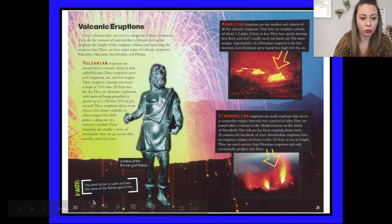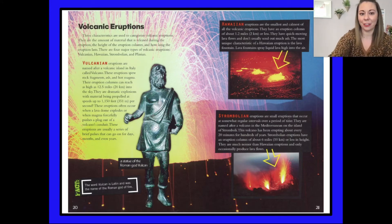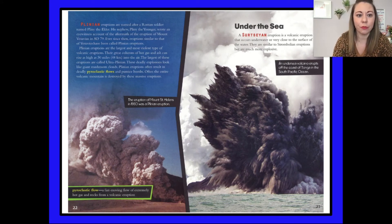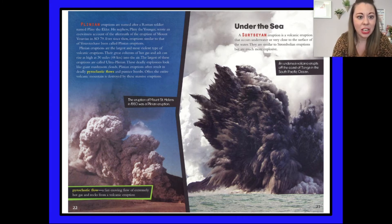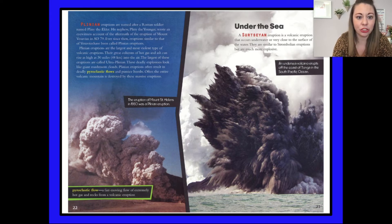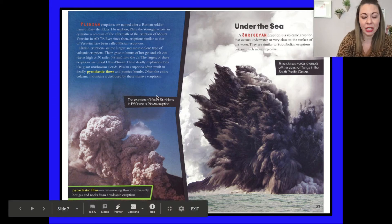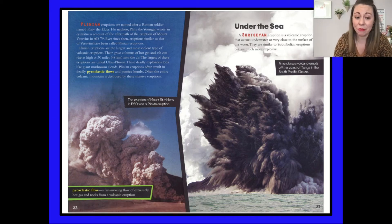There's a fast fact in the corner: the word Vulcan is Latin and was named for the Roman god of fire. Plinian eruptions are named after the Roman soldier Pliny the Elder. His nephew, Pliny the Younger, wrote an eyewitness account of the aftermath of the eruption of Mount Vesuvius in AD 79. Ever since then, eruptions similar to Vesuvius have been called Plinian eruptions. Plinian eruptions are the largest and most violent type — their great columns of hot gas and ash can rise as high as 30 miles or 48 kilometers into the air. The largest are called Ultra Plinian. These deadly explosions look like giant mushroom clouds and often result in deadly pyroclastic flows and pumice bombs, and often the entire volcanic mountain is destroyed.